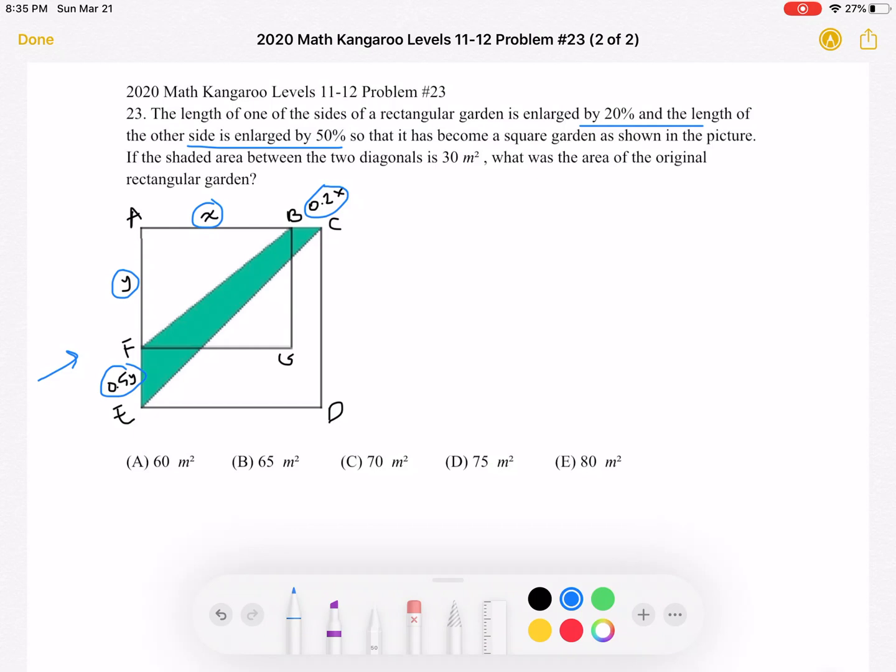We want to find the area of the original rectangular garden. That would be X times Y. That's why I made those two variables, because we want to find the area. So basically, we want to find a way to relate the product XY in order to find what that XY is.